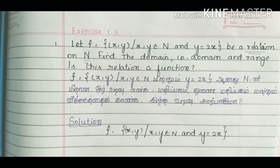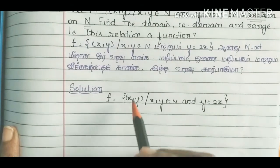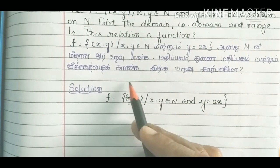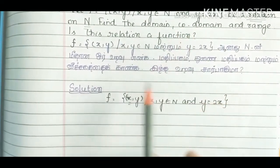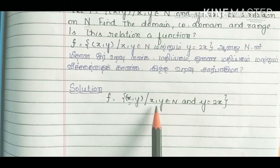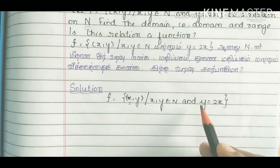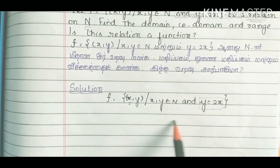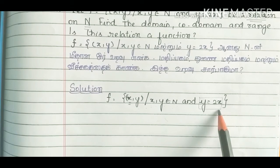So the solution: we can call it f, a relation of ordered pairs. In this ordered pair, the first term is the first set and the second term is the second set. Now x and y — x belongs to natural numbers, y belongs to natural numbers, and y is equal to 2x. This is the relation between x and y, decided by the equation y = 2x.